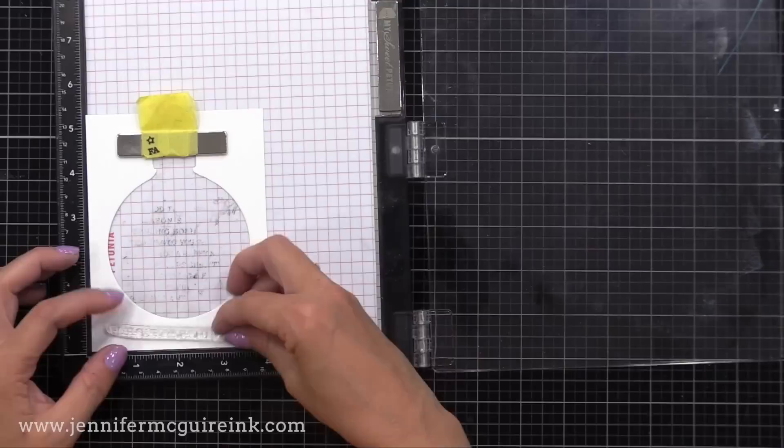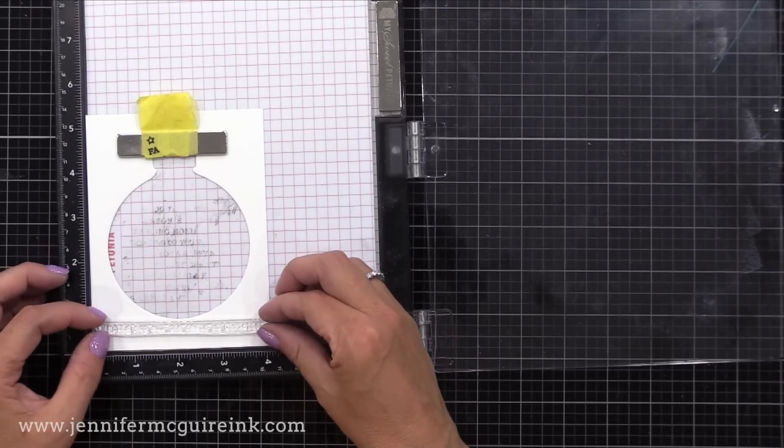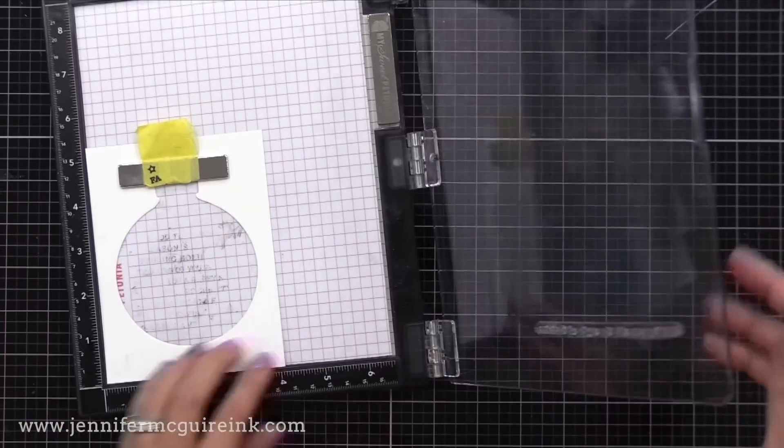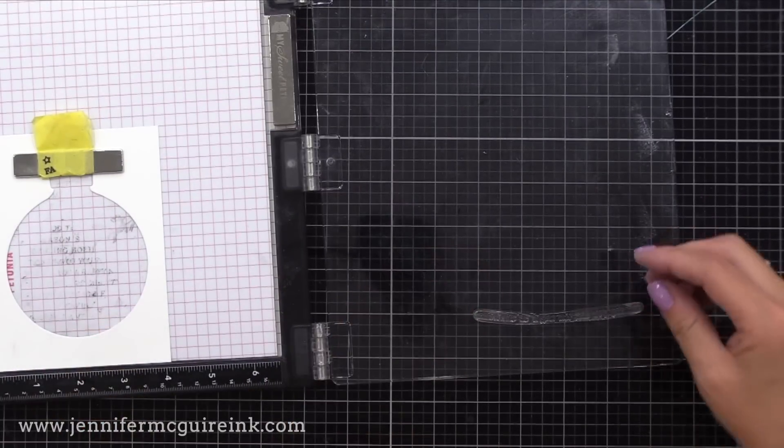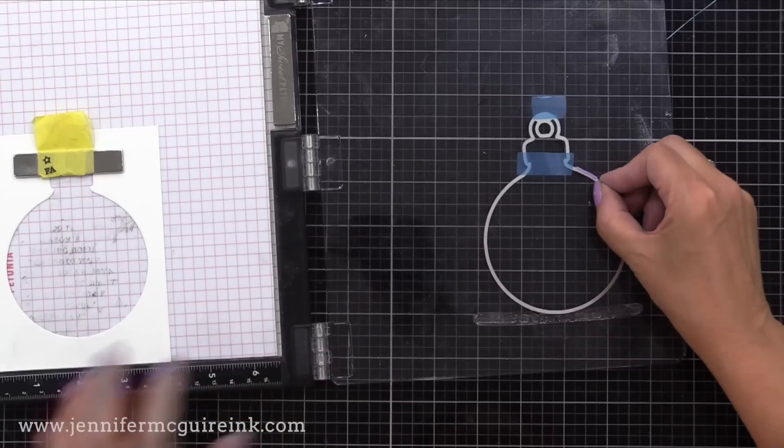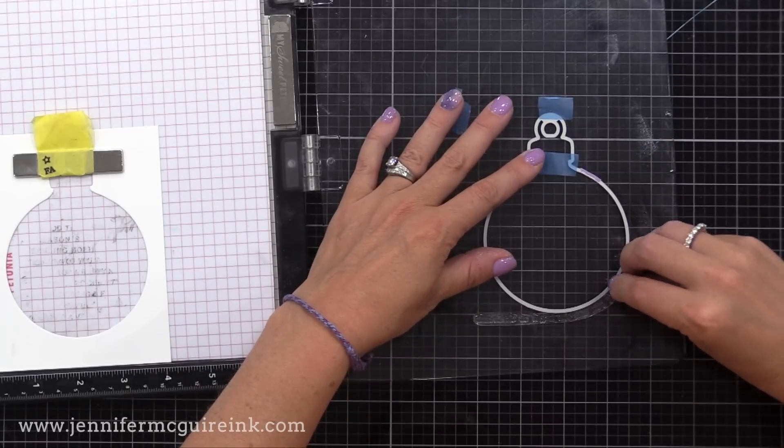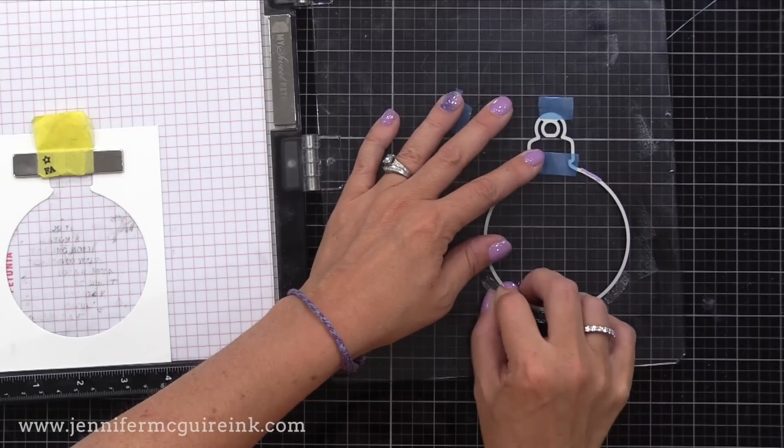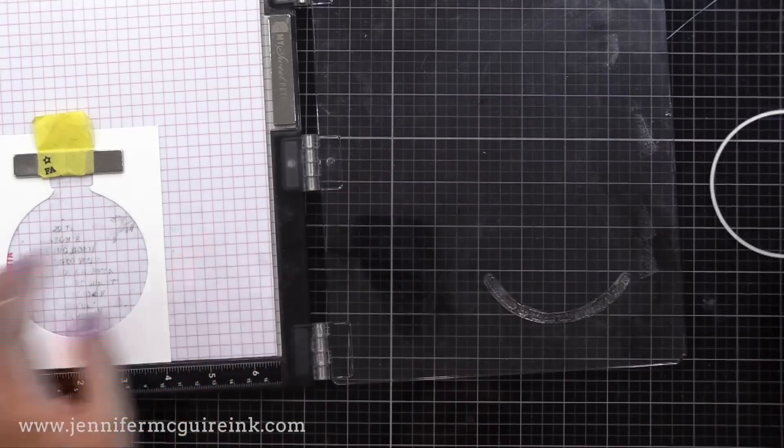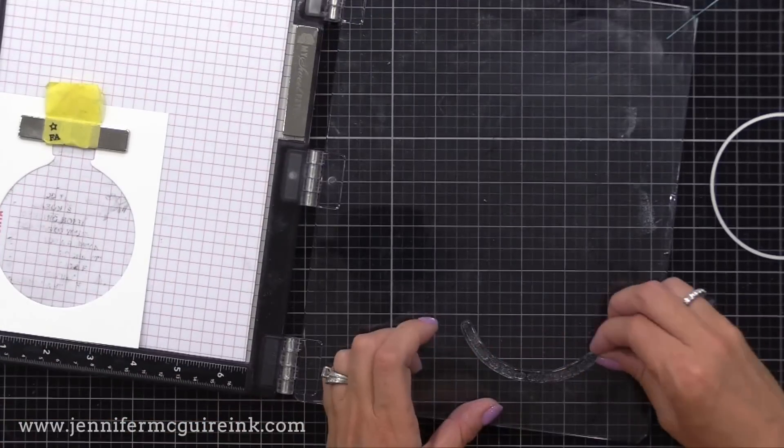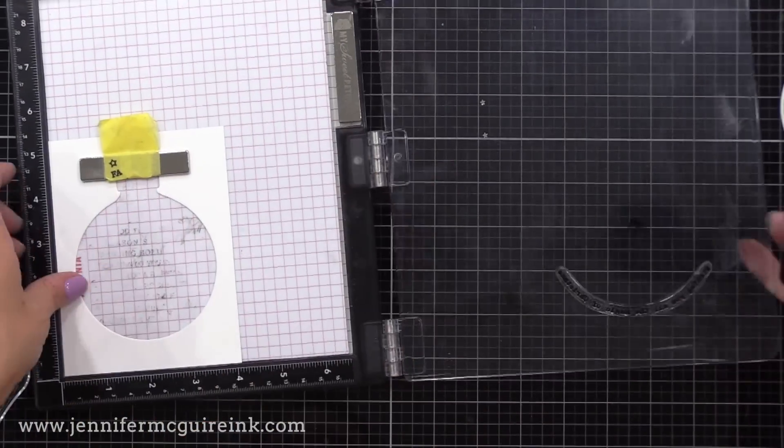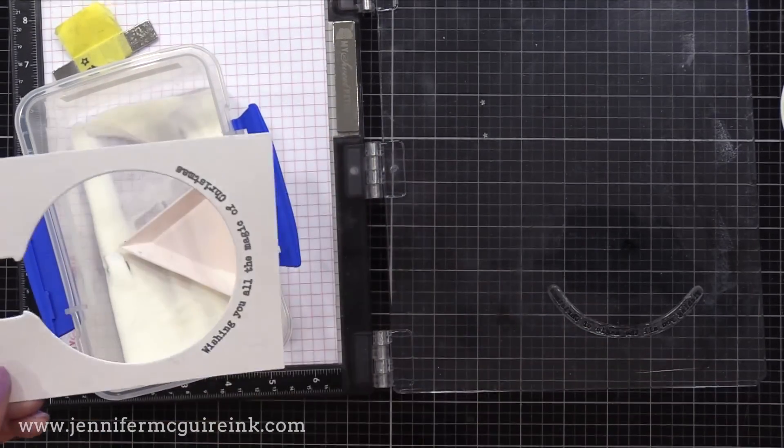I wanted a long sentiment that I could curve along the bottom of the ornament. So I have Wishing You All the Magic of Christmas, and I'm centering it right underneath the bulb. I will then close the door on my stamping tool, and then start to arch the stamp to meet the curve of that bulb. I keep the centers of the stamp stuck to the stamping tool. Then I put the die next to it, and I just curve the sentiment to meet the curve of the ornament.